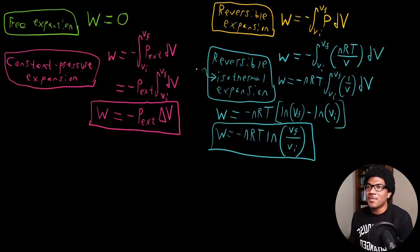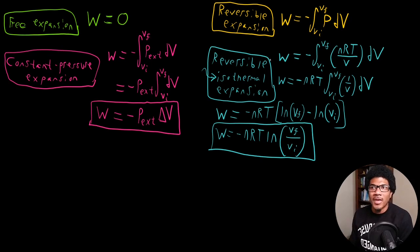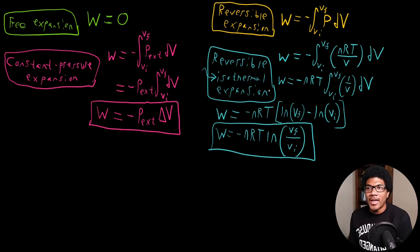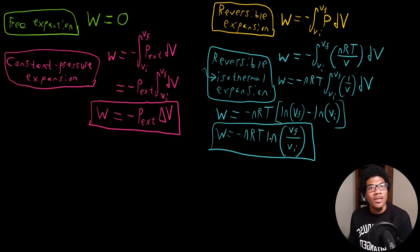So those are four different types of pressure volume work: a free expansion with no external pressure; a constant pressure expansion where pressure remains constant; a reversible expansion where pressure can vary; and a reversible isothermal expansion with varying pressure and constant temperature, which we showed using the ideal gas law.